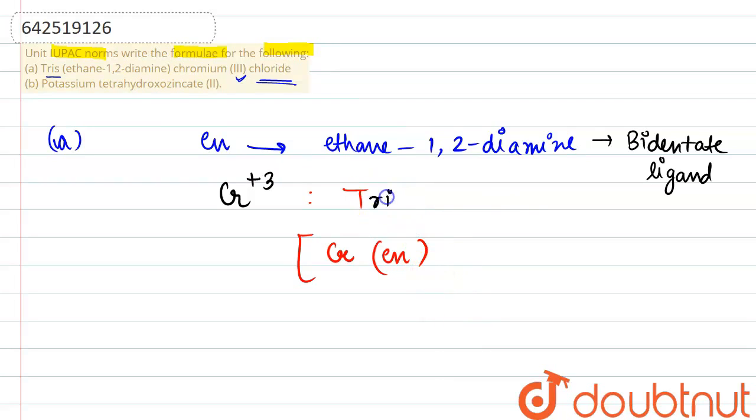Tris means 3 EN3 would be present over here. X and Cl would be there. And we know that 1 chloride has a charge of minus 1. How many chlorides would be there? We don't know that. So, let's find the charge.